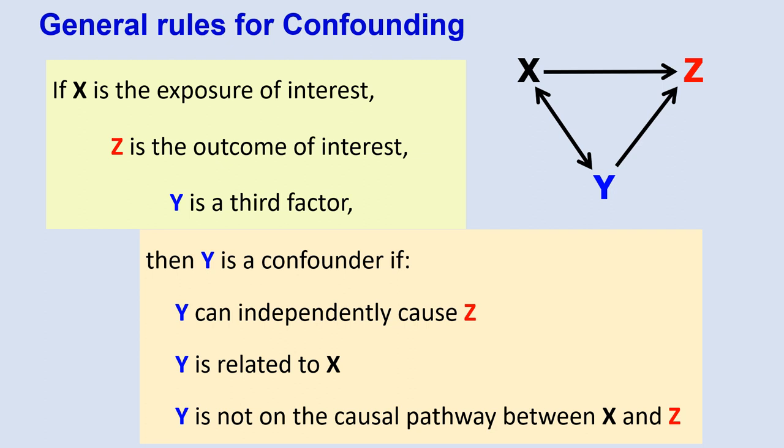We know that if X is the exposure of interest, Z is the outcome of interest, and Y is a third factor, then Y is a confounder if Y can independently cause Z, Y is related to X, and Y is not on the causal pathway between X and Z. We talked about this in more detail in the previous Epi Minutes session on confounding.